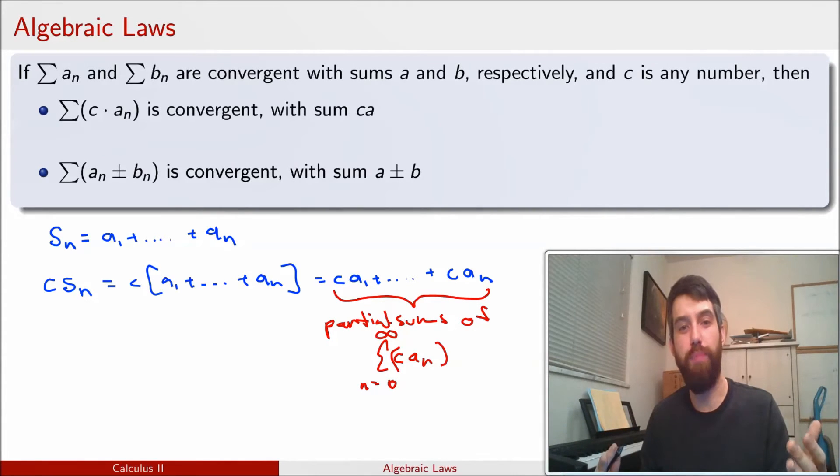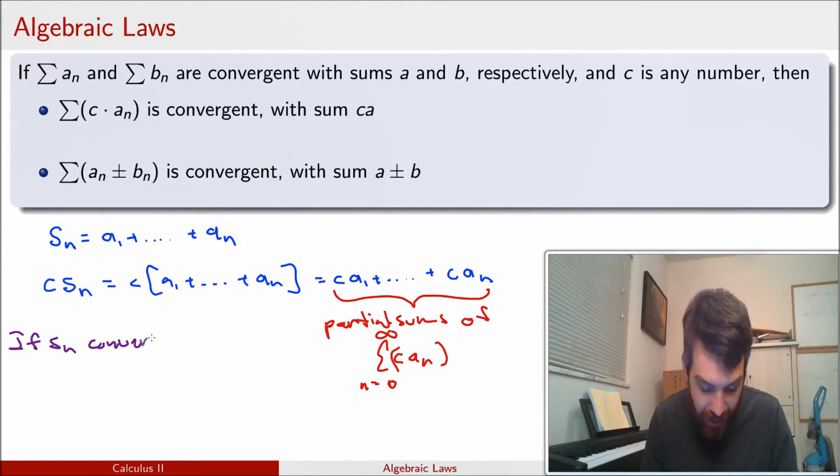Now I'm going to use a property of sequences, and I'm going to use this property of sequences to give me the analogous property for series. That is, Sₙ is a sequence, and c times Sₙ is a sequence, and I know that if Sₙ converges as a sequence, this is a claim about sequences,